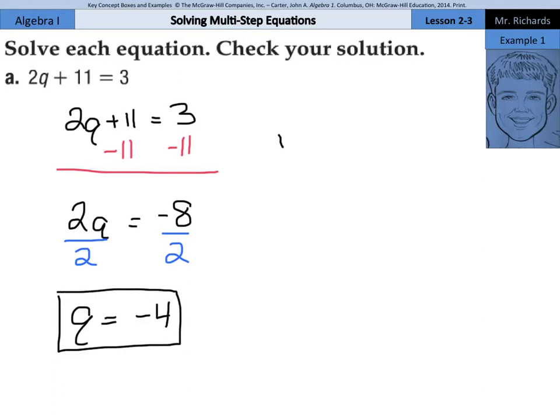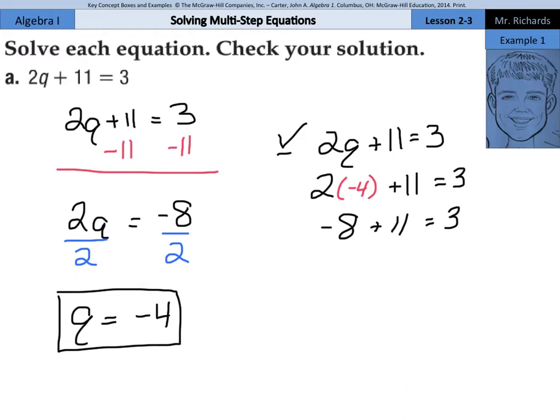Now we do need to check our solution, and so if we start off with the original equation 2q plus 11 equals 3, we can substitute in our answer for q. 2 times negative 4 plus 11 needs to equal 3. 2 times negative 4 is negative 8, plus 11 needs to equal 3, and negative 8 plus 11 is 3, so 3 equals 3, so we are checked and good to go.